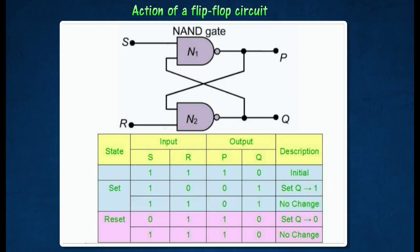At the hold state, input R returns to logic 1. However, the output state is unchanged and repeats the flip state. For example, P and Q are still at logic 0 and 1 respectively.